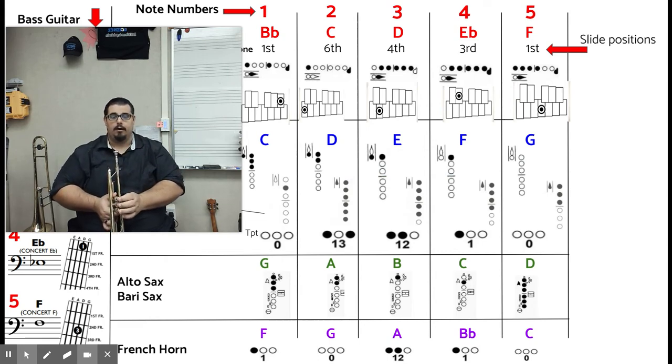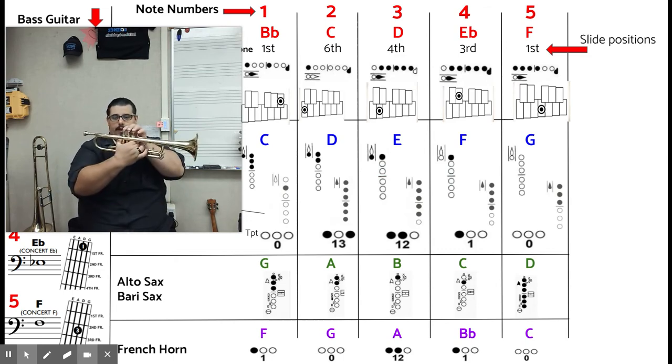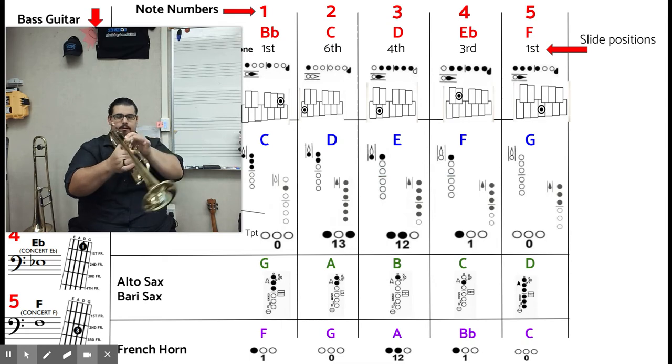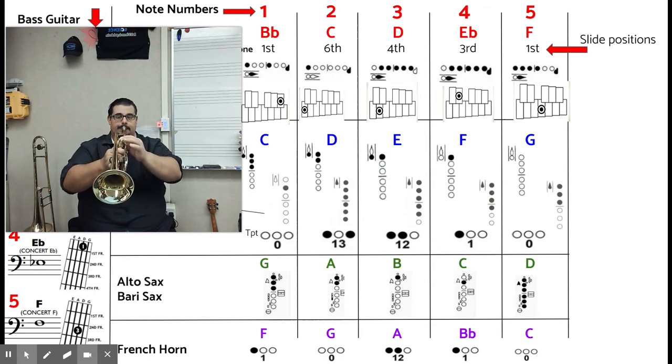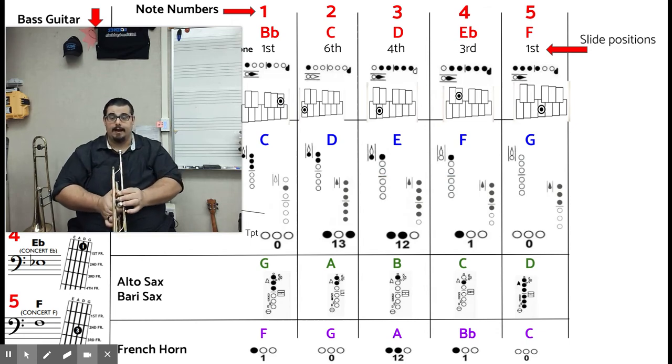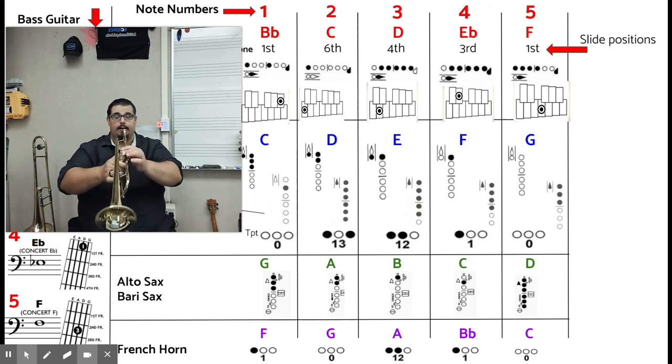And then you're going to play note number three. And the fingering for that is the first and second valve only. So we're going from here, lifting up this finger, and switching these two fingers. Note number three, E for trumpet. Here's what it sounds like. Let's do that again. Take a big breath.